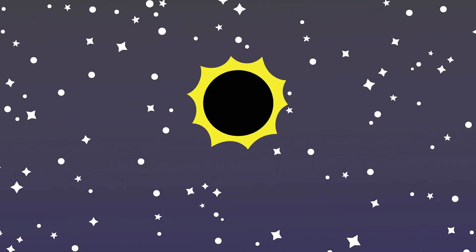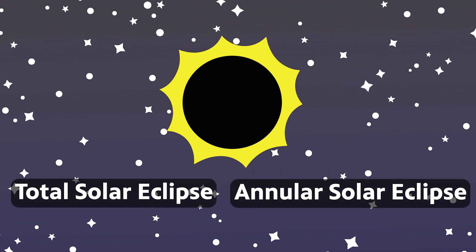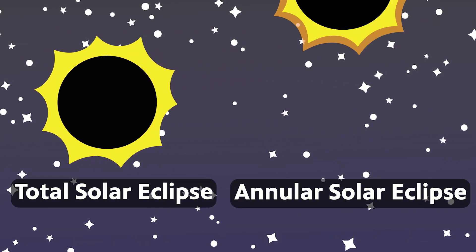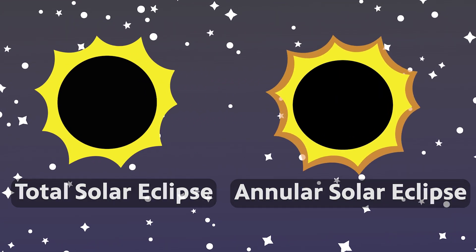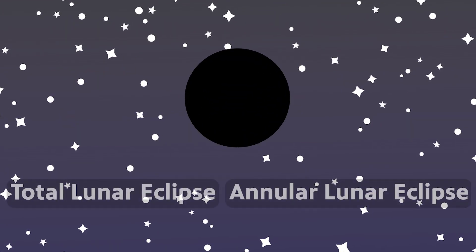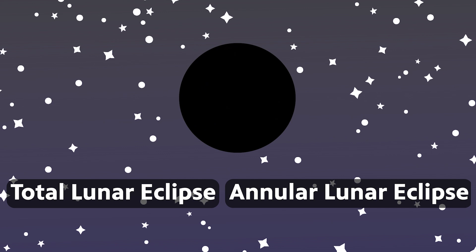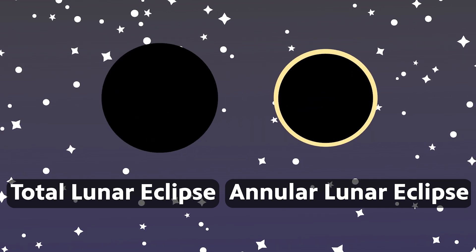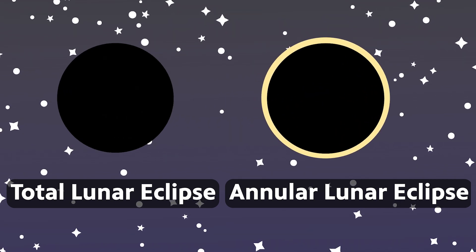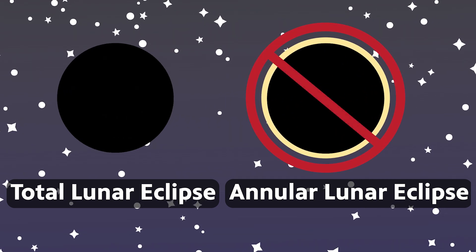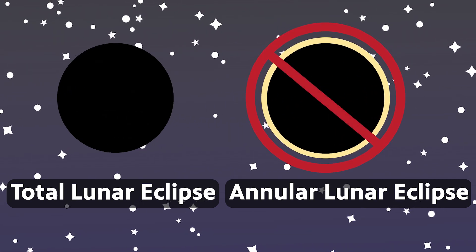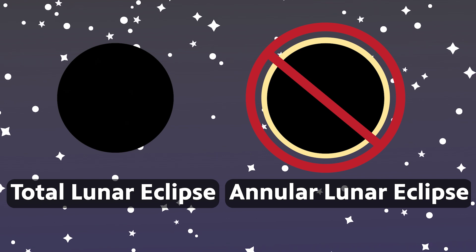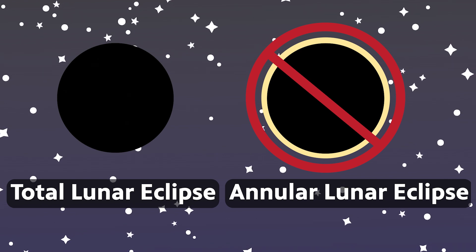We have total solar eclipses and we have annular solar eclipses. We have total lunar eclipses. Why don't we have annular lunar eclipses? The reason has to do with who's eclipsing who.